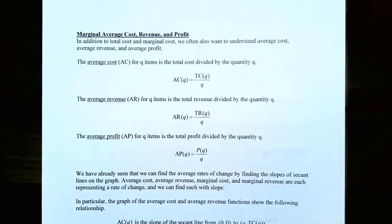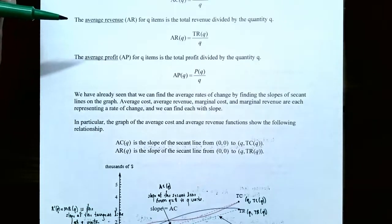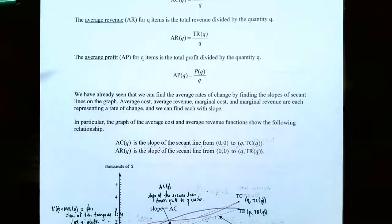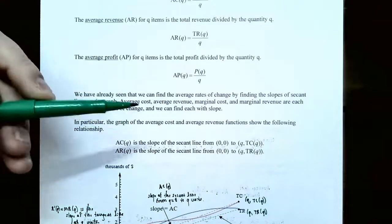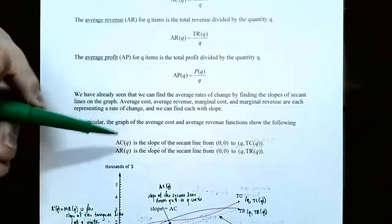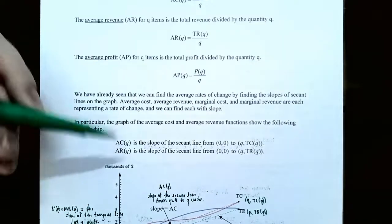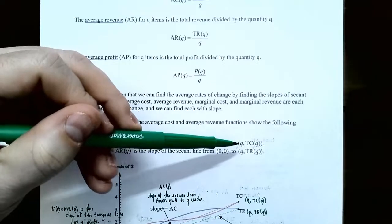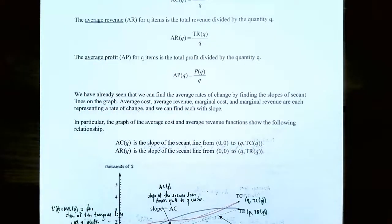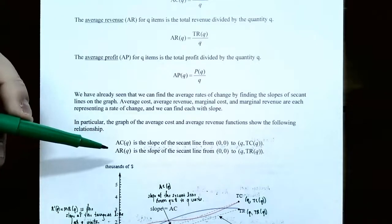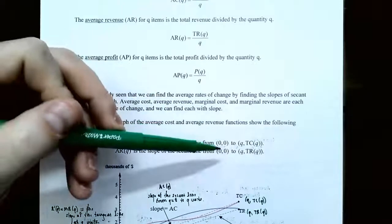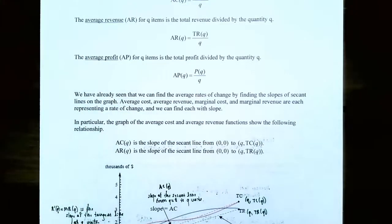We've already seen how to find average rates of change by finding the slopes of secant lines on a graph. The average cost and average revenue each represent a rate of change. In particular, the average cost evaluated at Q units is the slope of the secant line connecting the two points (0, 0) and (Q, C(Q)) on the graph. Similarly, the average revenue at Q units is the slope of the secant line between (0, 0) and (Q, R(Q)).